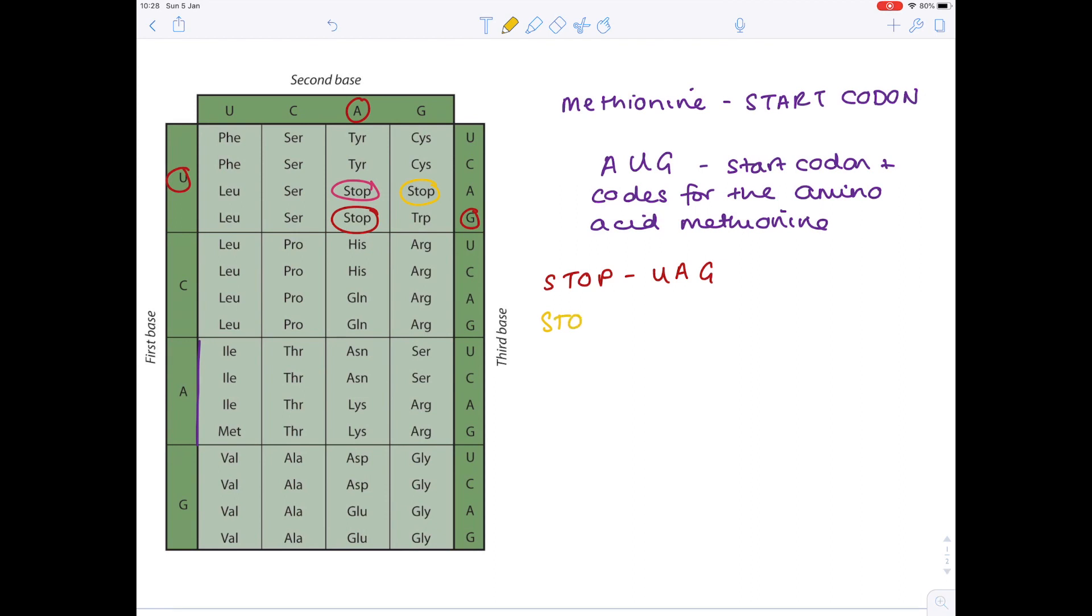How about the stop codon for yellow? Well, that's A, G, U again. And then lastly, how do we produce the stop codon which is produced by the pink circle? Well, we're looking at A, A, U. And therefore, there are the three codons which produce the stop and therefore cut off the polypeptide.